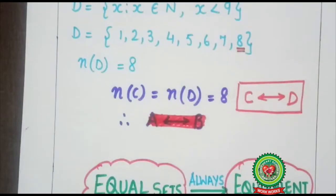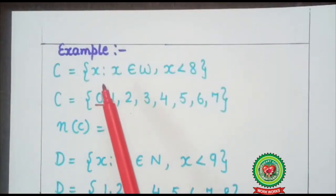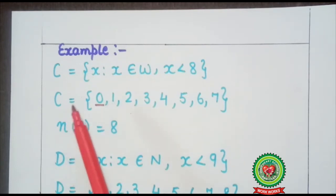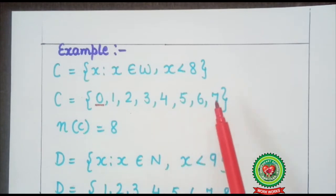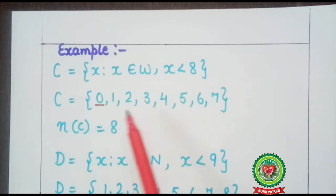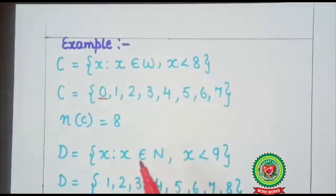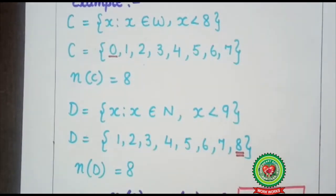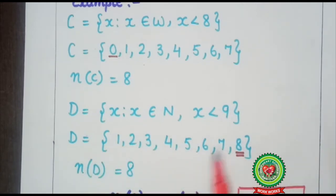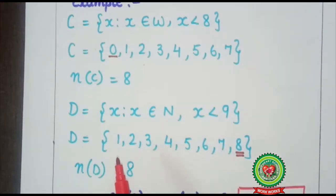Next example: set C is {X such that X belongs to W, where X is less than 8}. W stands for whole numbers, so C = {0, 1, 2, 3, 4, 5, 6, 7} in roster form, and the cardinal number of C is 8. Set D is {X such that X belongs to N, where X is less than 9}. N stands for natural numbers, so D = {1, 2, 3, 4, 5, 6, 7, 8} and the cardinal number of D is also 8. The cardinal numbers of C and D are the same, but 0 is not present in set D and 8 is not present in set C, so they are equivalent but not equal.